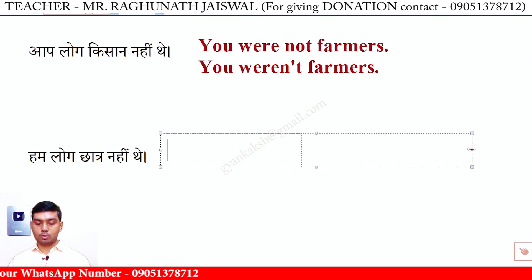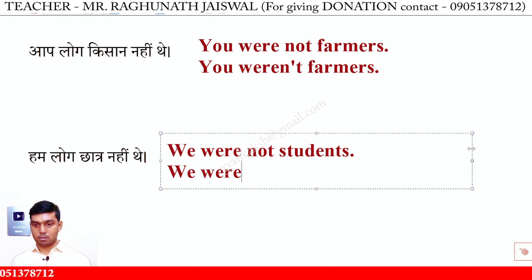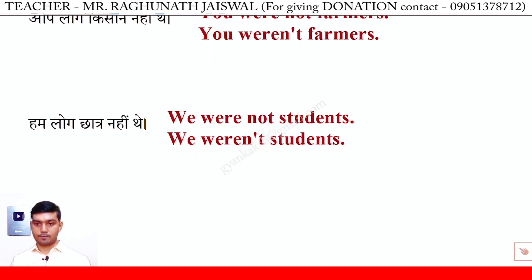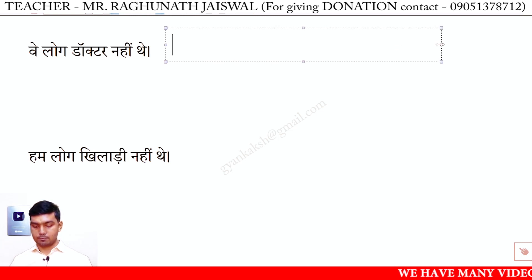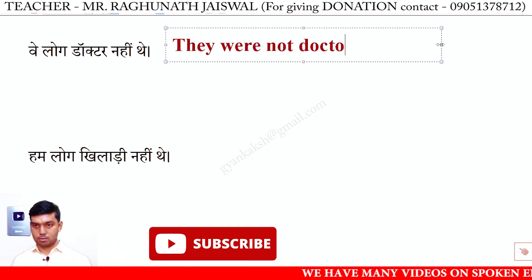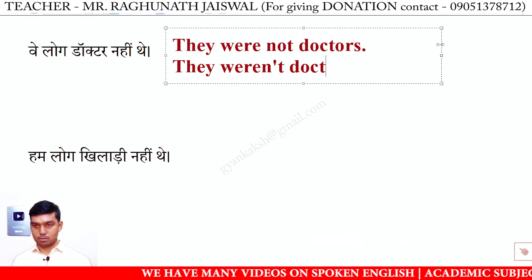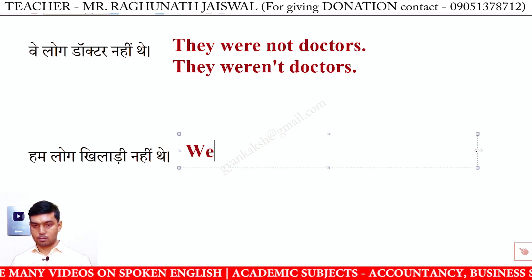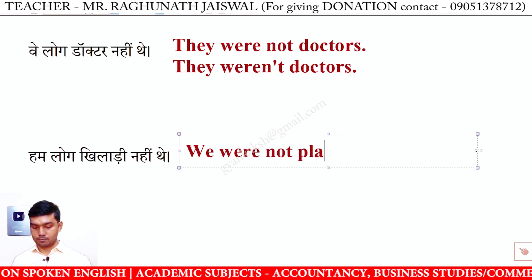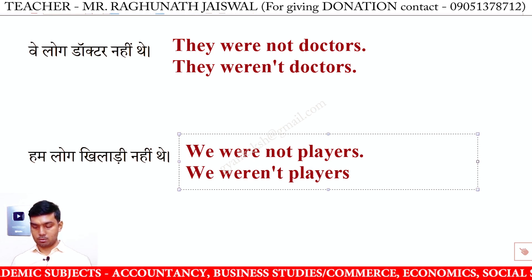Hum log chhatr nahi the — We were not students. Short form: we weren't students. Ve log doctor nahi the — They were not doctors. Short form: they weren't doctors. Hum log khiladi nahi the — We were not players. Short form: we weren't players.